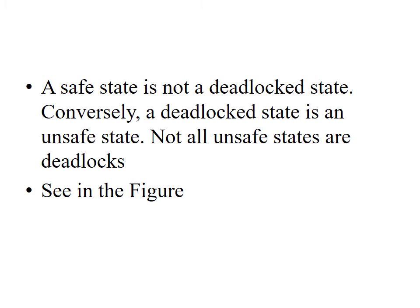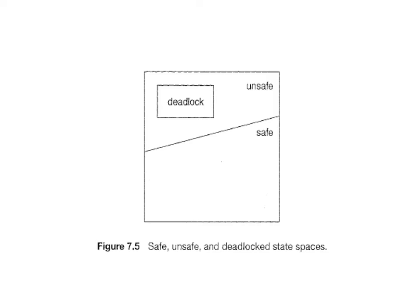A safe state is not a deadlocked state. A deadlocked state is an unsafe state, but not all unsafe states are deadlocks. As long as the state is safe, the operating system can avoid unsafe states. In an unsafe state, the operating system cannot prevent processes from requesting resources in such a way that a deadlock occurs. The behavior of the processes controls unsafe states.